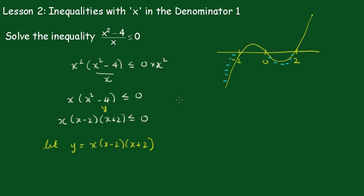So the solution to this is simply x will be less than or equal to, because we've got an equal to sum up here, negative 2. Or x lies between 2 and 0.